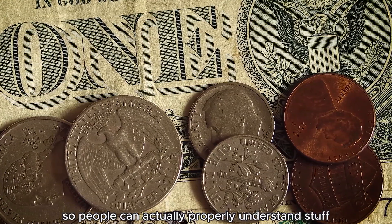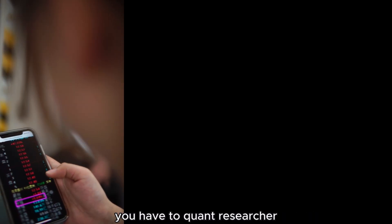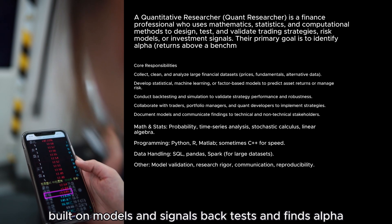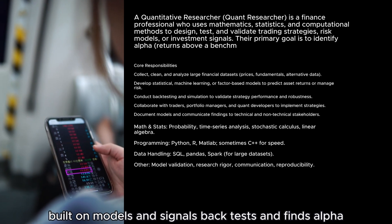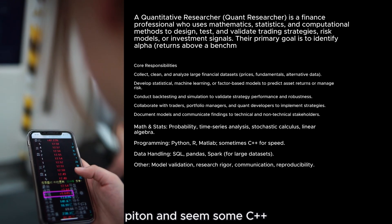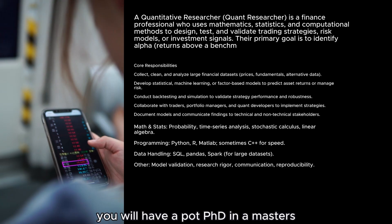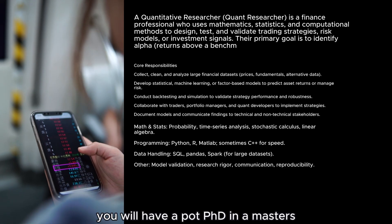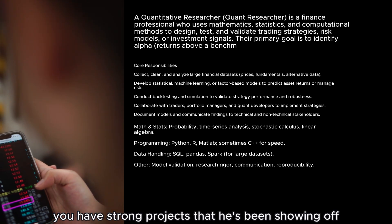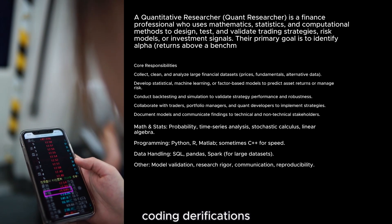You have the quant researcher, who mainly builds models and signals, back tests, and finds alpha. Their skills will be maths and stats, Python, and some C++. They will have a PhD or a master's, strong projects to show off, and be very good at probability, stats, coding, and derivations — all things that come up in interviews.